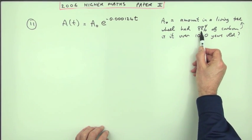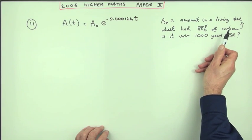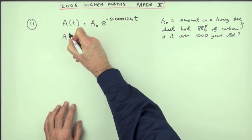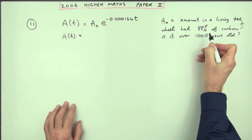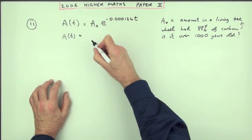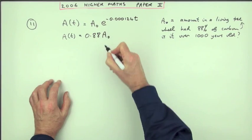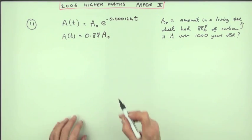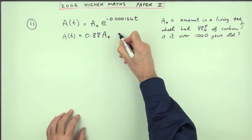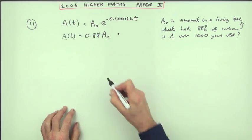If it says it's got 88% of the carbon it should have that means the amount you've actually got is 88%, 88 over 100, or 0.88 of the carbon it should have. Now realizing that gets you the first mark and then put that into that equation.